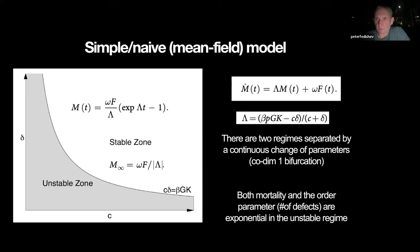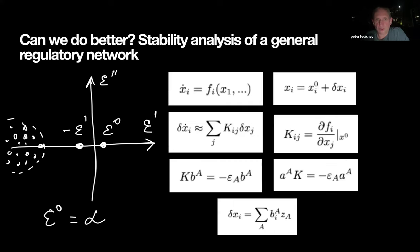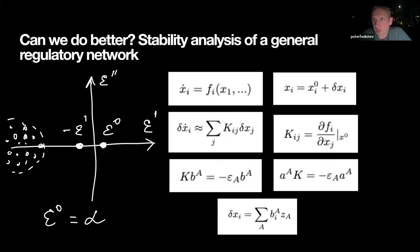In the unstable mode the number of regulatory errors grows exponentially, which looks like aging. In the stable mode errors don't grow, so you can live essentially forever — corresponding to non-aging individuals. This simple model shows that without inventing any superstructure, just by continuously changing parameters you can cross between stable and unstable regimes, which is probably what evolution is doing all the time.